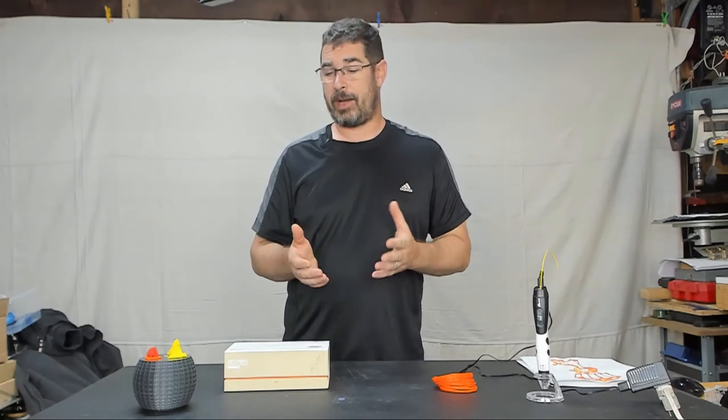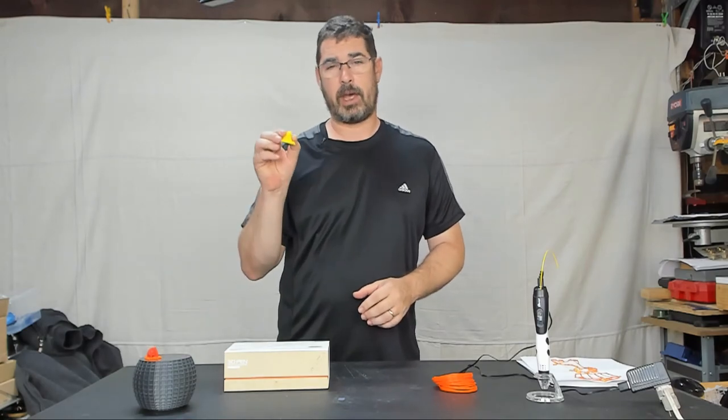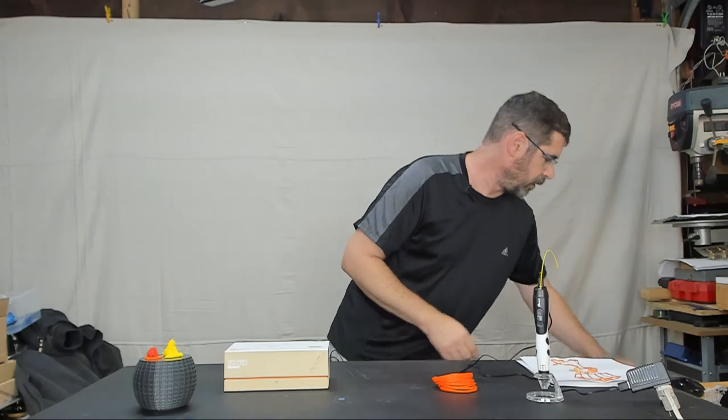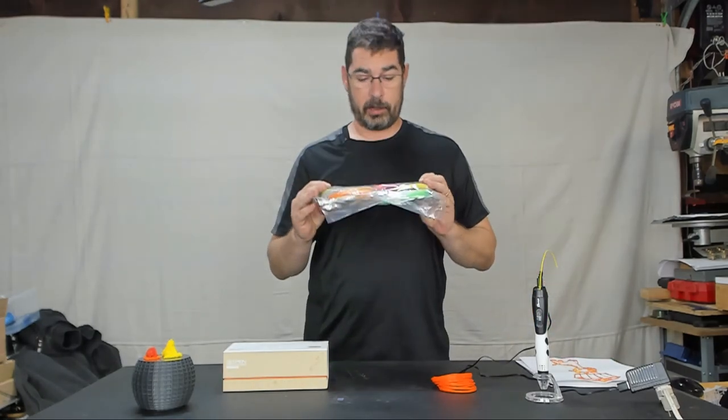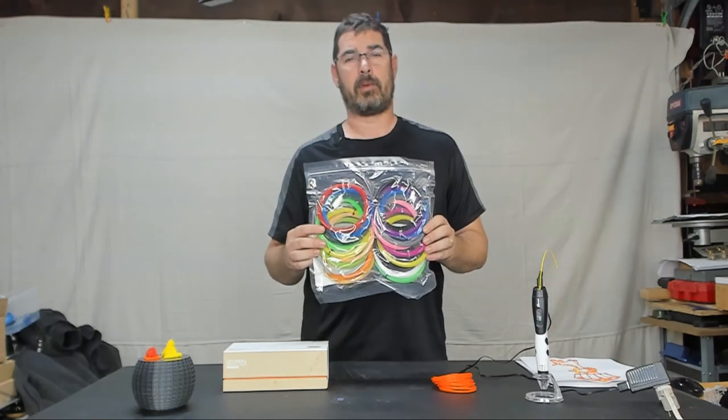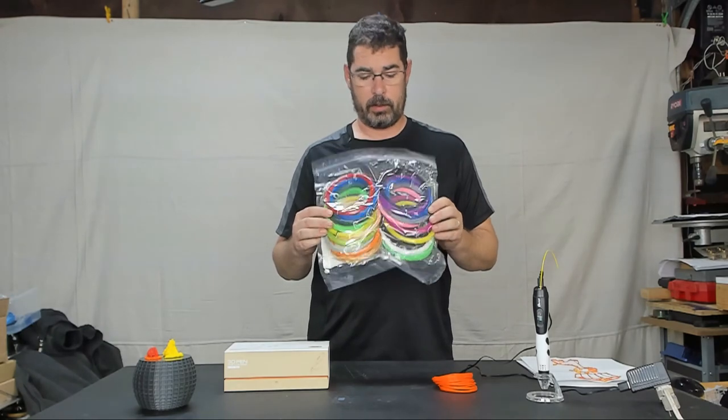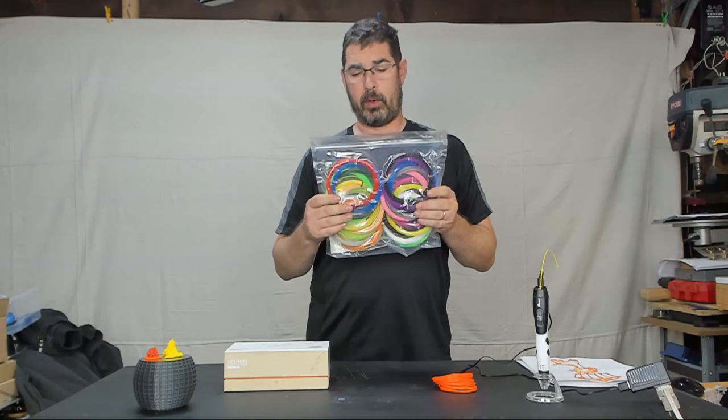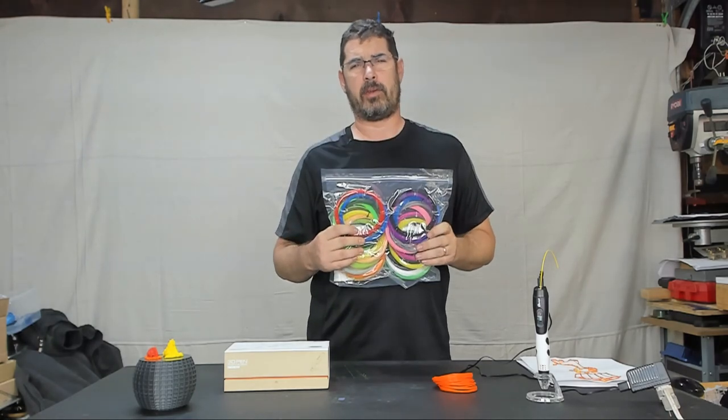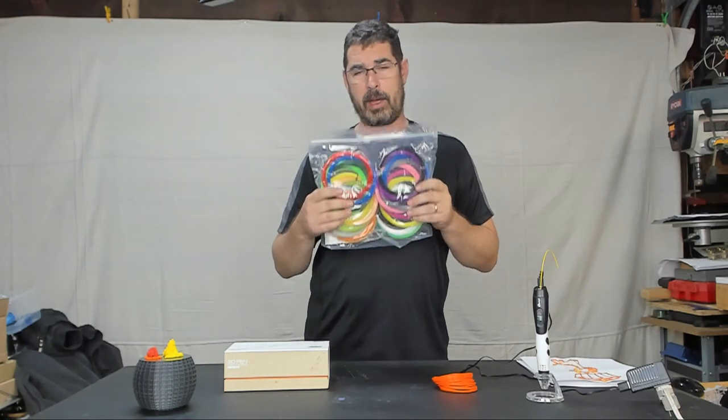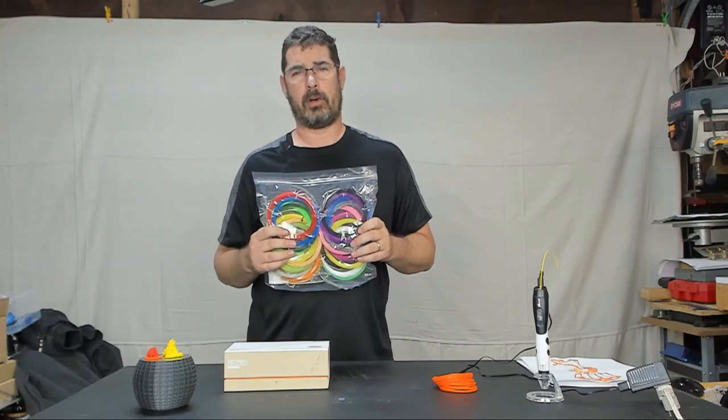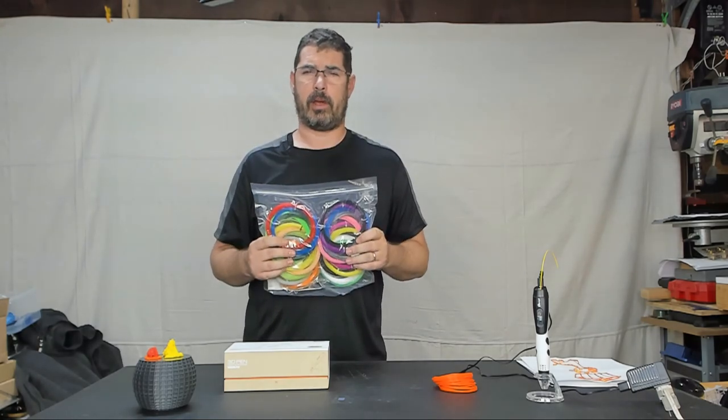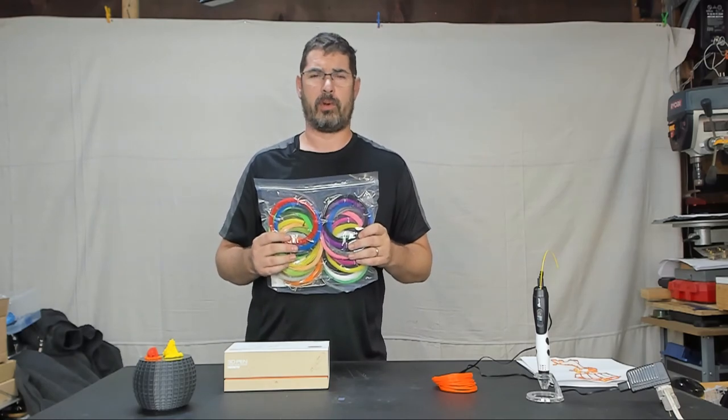Now if you are going to be using this for a child, I do not recommend using ABS. In fact, what I recommend doing is picking something like this up at Amazon or a local retailer. It comes with an assortment of colors, but more importantly, these are made out of non-toxic PLA and these are made to melt at the lower temperature 180 to 200 range so that they are safer and cooler for children to use.